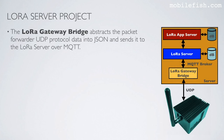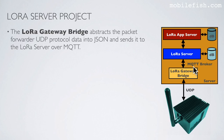The LoRa Gateway Bridge abstracts the packet forwarder UDP protocol data into JSON and sends it to the LoRaServer over MQTT. To simplify the drawings, the word MQTT broker is used here — it means the LoRa Gateway Bridge publishes data to the MQTT broker and the LoRaServer subscribes to topics on this MQTT broker.